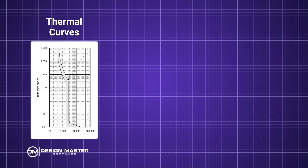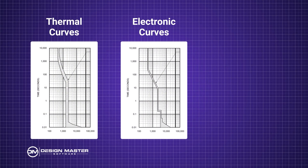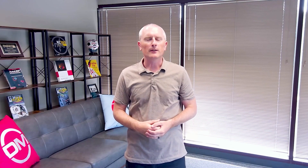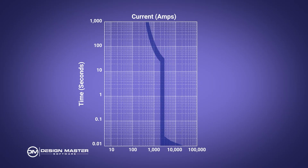There are three basic shapes of curves we'll talk about: thermal curves, electronic curves, and fuses. The thermal curves are for thermal magnetic breakers and they have three parts. On the left-hand side you have the rating of the breaker itself, and you don't want it to trip immediately when the current hits that rating, so that's usually a fairly long trip time.